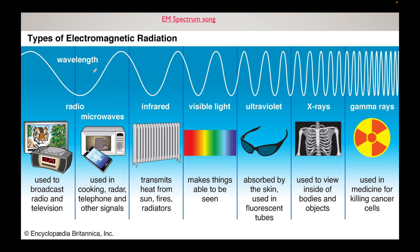So first thing is, you have a few different types of electromagnetic radiation in a spectrum. Starting from the left with the biggest wavelength, they are radio waves, then microwaves, infrared, visible light, ultraviolet, x-rays and gamma rays.